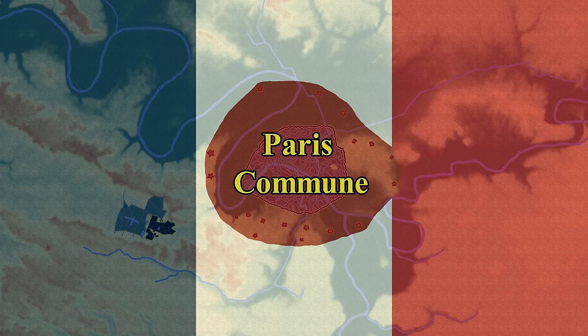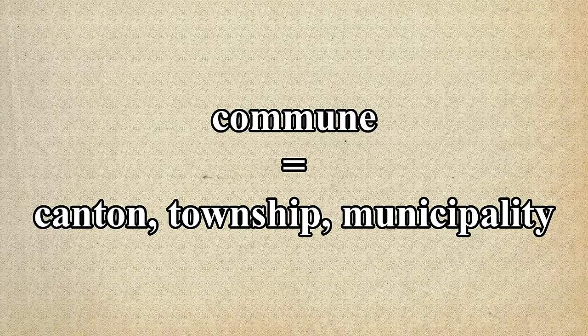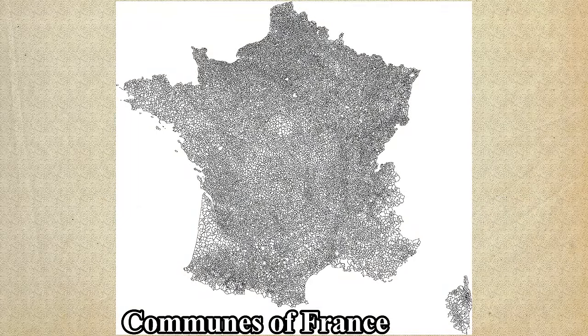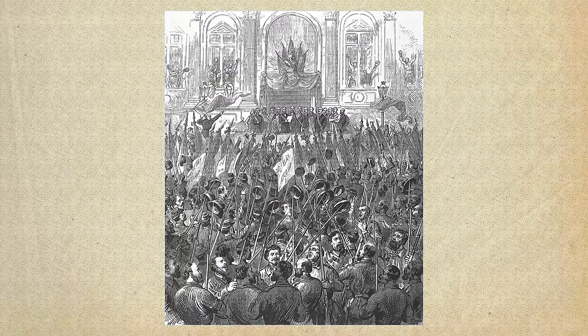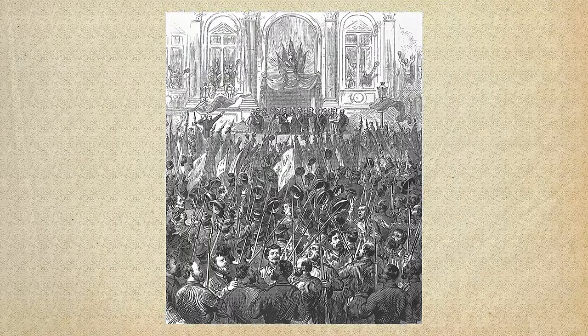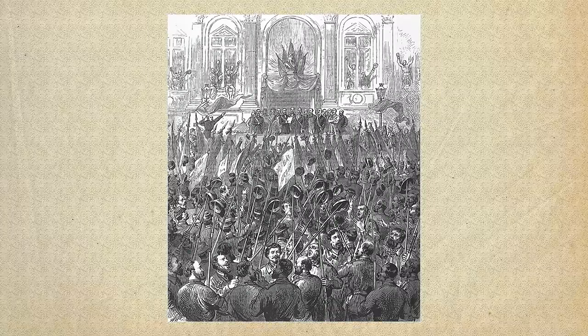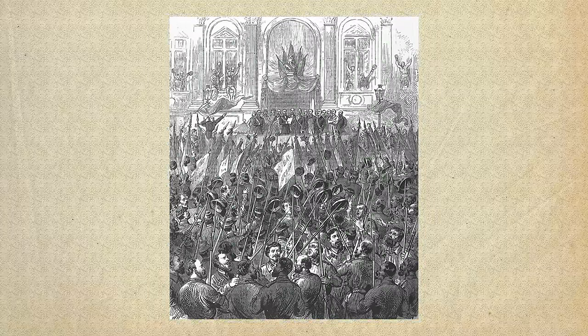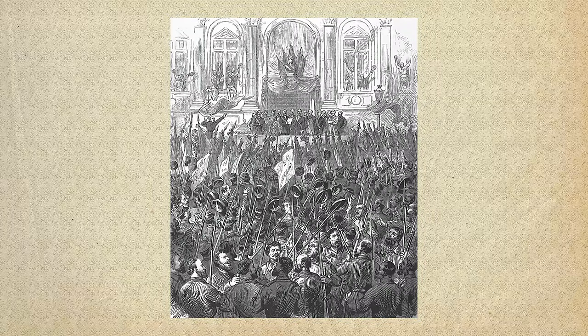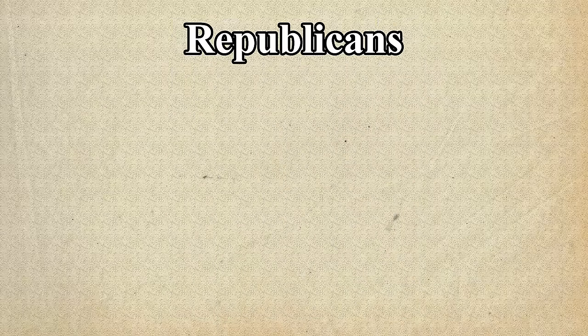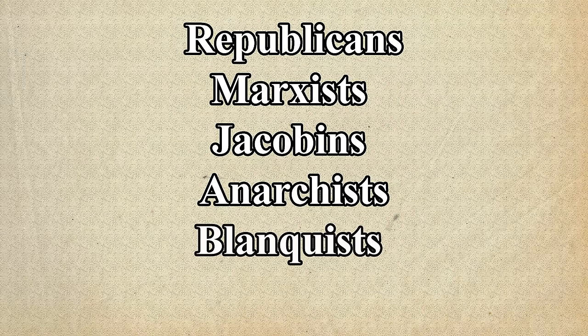Paris, now abandoned by its only governing body — since it had no city council and was directly controlled by the main French government — decided to create and appoint its own city council to govern themselves. They named this new city council the Paris Commune. Contrary to popular belief, this name has nothing to do with communism — commune simply means city or county council in French, and there are currently over 36,000 communes in France. The makeup of the council, which met for the first time on the 20th of March, was a hodgepodge of leftist groups — from simple republicans to Marxists, Jacobins, anarchists, Blanquists, and others.